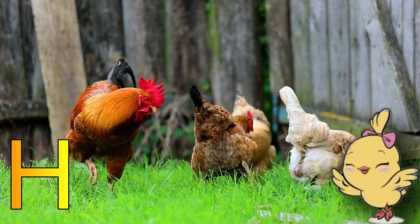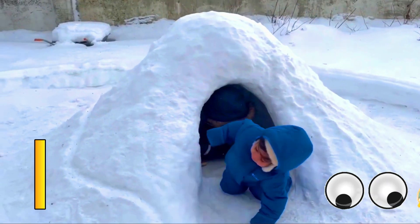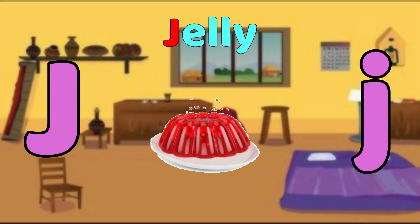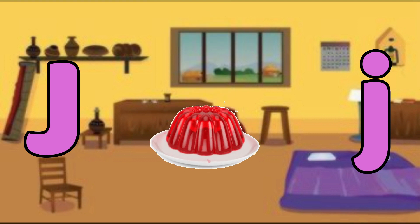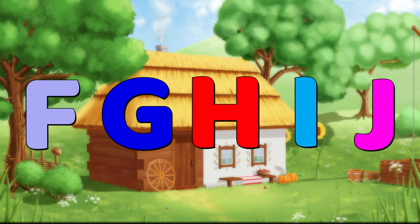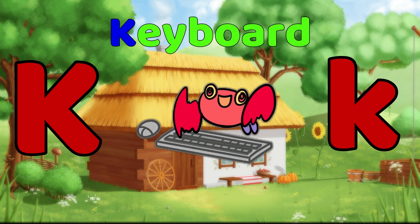I is for Igloo. I, Igloo, I. J is for Jelly. J, Jelly, J. K is for Keyboard. K, Keyboard, K.